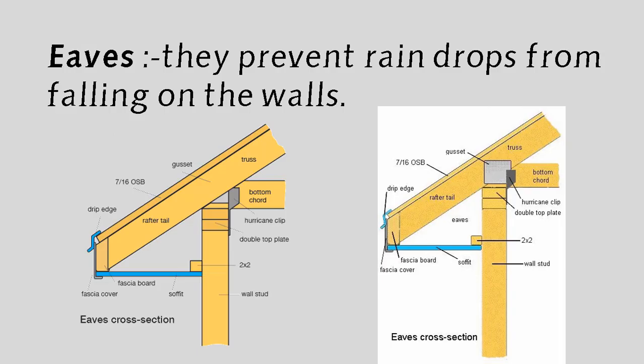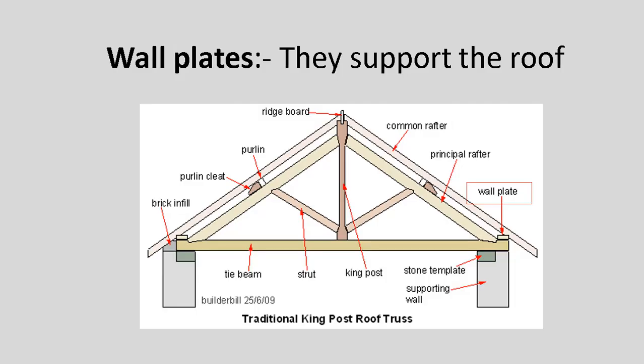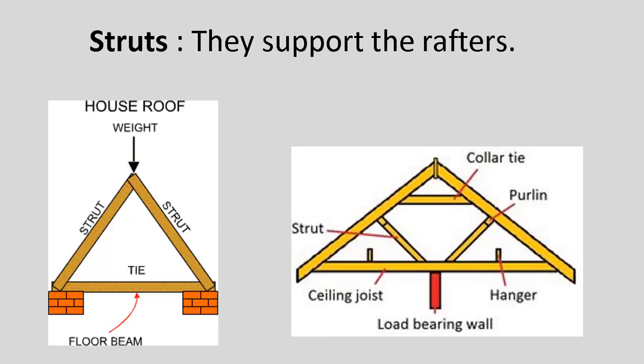Eaves: They prevent raindrops from falling on the walls. Wall plates: They support the roof. Struts: They support the rafters.